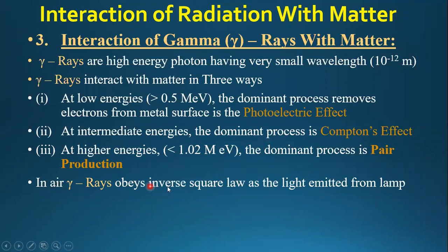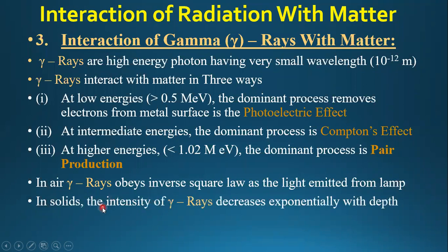In air, gamma rays obey the inverse square law, similar to light emitted from a lamp. In solids, the intensity of gamma rays decreases exponentially with depth.